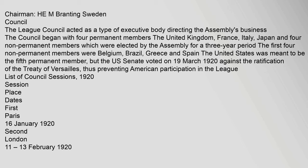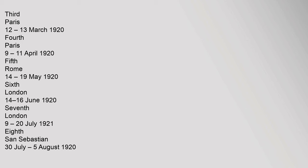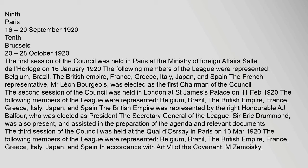List of Council Sessions from 1920: Session 1, Paris, 16 January; Session 2, London, 11–13 February 1920; Session 3, Paris, 12–13 March; Session 4, Paris, 9–11 April; Session 5, Rome, 14–19 May; Session 6, London, 14–16 June; Session 7, London, 9–20 July; Session 8, San Sebastian, 30 July–5 August 1920; Session 9, Paris, 16–20 September; Session 10, Brussels, 20–28 October 1920. The first session of the Council was held in Paris at the Ministry of Foreign Affairs, Salle de l'Horloge, on 16 January 1920, with Belgium, Brazil, the British Empire, France, Greece, Italy, Japan, and Spain represented. M. Léon Bourgeois was elected as the first chairman of the Council.